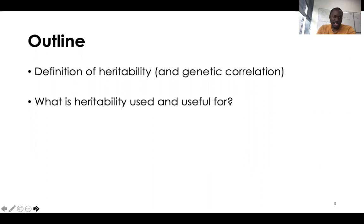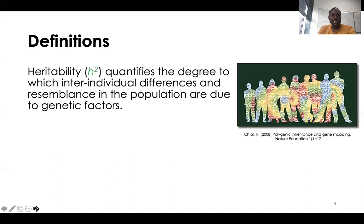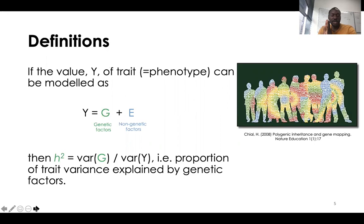Heritability quantifies the degree to which inter-individual differences and inter-individual resemblance in the population are due to genetic factors. This concept — heritability, which is now a parameter — can be approached through different angles, and I will give you two of those angles.